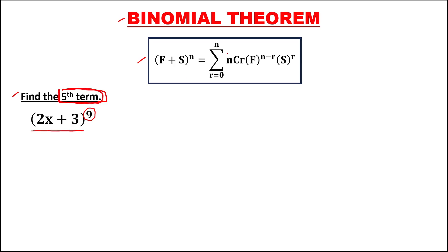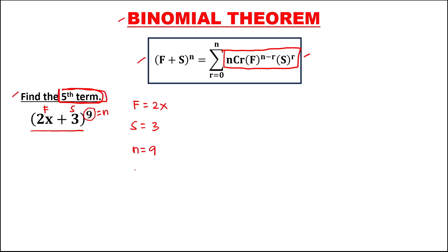To find the fifth term using this formula, we need to find the values. So the first term is equal to 2x, the second term is equal to positive 3, then n is equal to 9. For r, since we're looking for the fifth term, r starts from 0, so r is 5 minus 1 — always minus 1 — so therefore r is equal to 4.